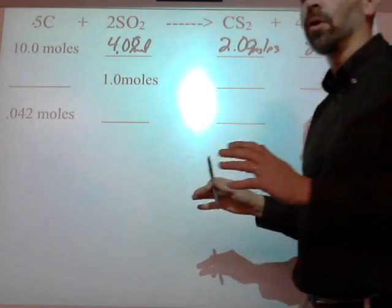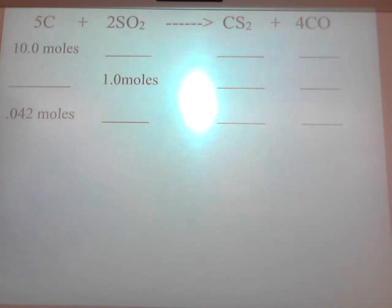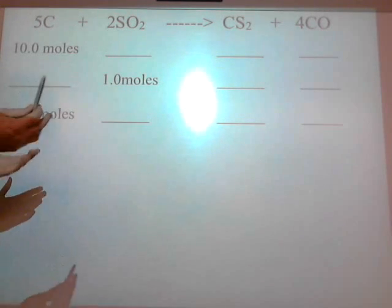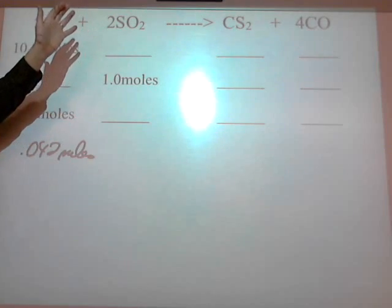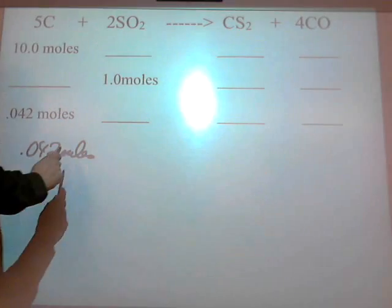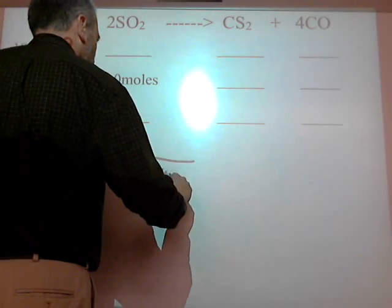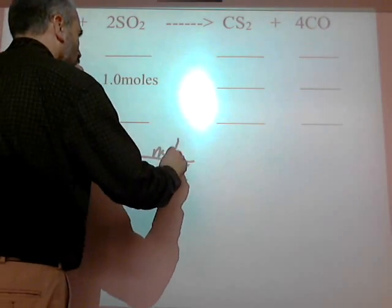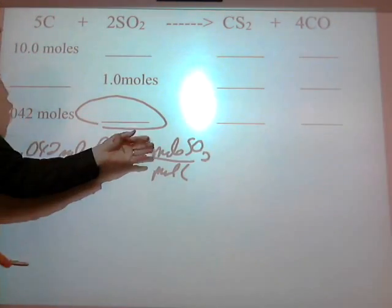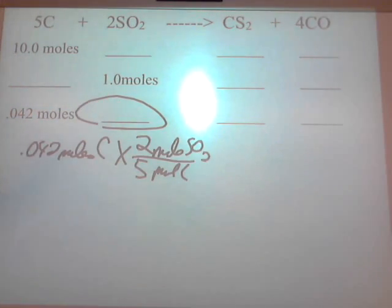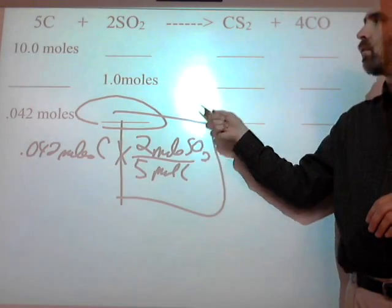I'm not going to do all of these, but I just want to show you not all of them are easy enough to do in your head. Say you want to go from here to here and you're given that number, and there's no other easy way. You can use the back of the paper to show the work. If I can't see how to go from here to here in my head, I write down 0.042 moles of carbon. Then I do the conversion: moles of carbon on the bottom because it has to cancel, moles of what you're looking for — moles of SO₂ — on the top. The coefficient of SO₂ is 2, coefficient of C is 5, then you simply multiply and divide. That's the same step you do in every word problem. Most of them you can do in your head by picking the easiest ones out.